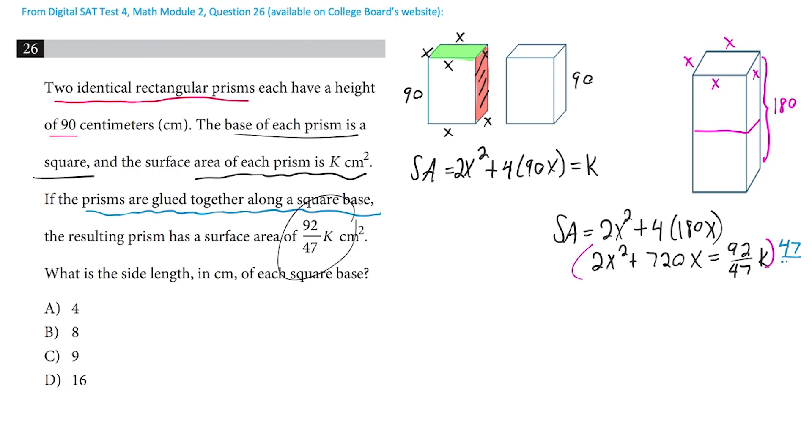Multiply by 47 over 92 here, 47 over 92 here. Here it's going to cancel, giving us just k. And so right now we've got k is equal to all of this stuff: 47 over 92 times 2x squared plus 720x.